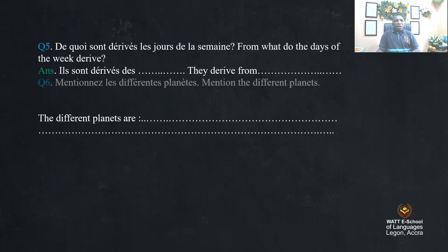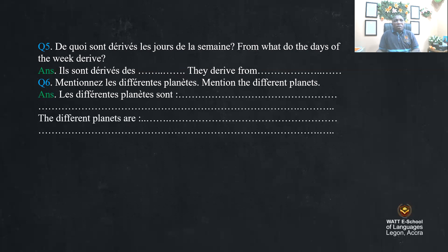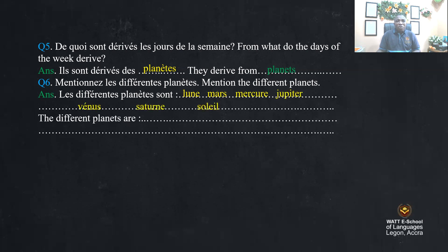All right. De quoi sont dérivés les jours de la semaine? From what do the days of the week derive? Ils sont dérivés des planètes — they derive from planets. Mentionner les différents planètes — mention the different planets. Les différents planètes sont: lune, Mars, Mercure, Jupiter, Vénus, Saturne, Soleil.